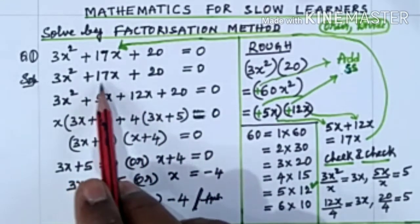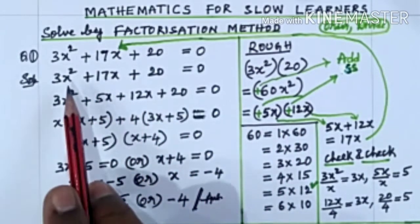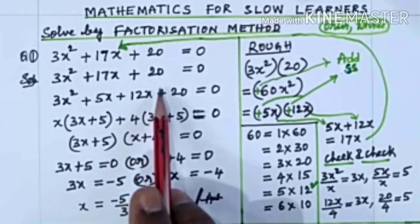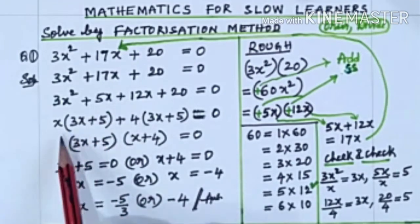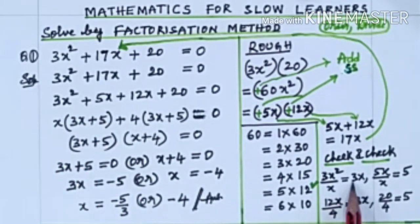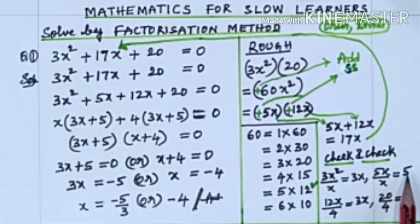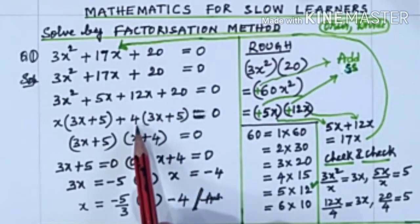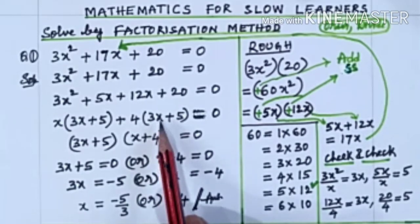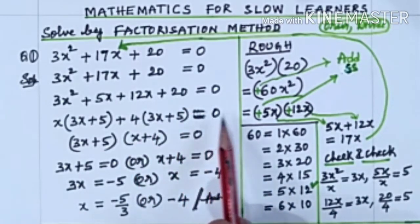Now we write instead of 17x: 5x and 12x. So 3x² + 5x + 12x + 20 = 0. Now x is common: 3x² ÷ x is 3x, plus 5x ÷ x is 5. Plus 4 is common: 12x ÷ 4 is 3x, plus 20 ÷ 4 is 5. Equal to 0.